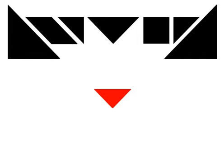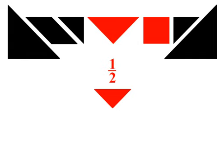The small triangle is half of the square, half of the medium triangle, and half of the parallelogram.